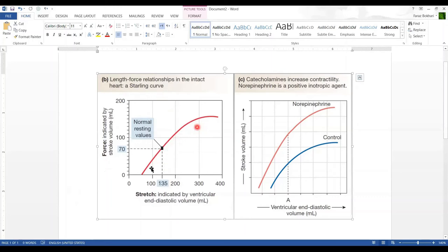This diagram gives you an interesting detail: the effect of catecholamines. He has used the normal curve, then plotted a curve where the same amount of stretch was done but in the presence of norepinephrine, which is a catecholamine. For each degree of stretch in the presence of norepinephrine, the amount of stroke volume or force generated was more.